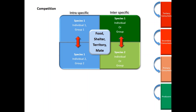There are few causes of competition: food, shelter, territory, and mate. When you win the territory, shelter and food come along with that win. In case of intraspecific interaction, food and mate are the main root causes of the competition.